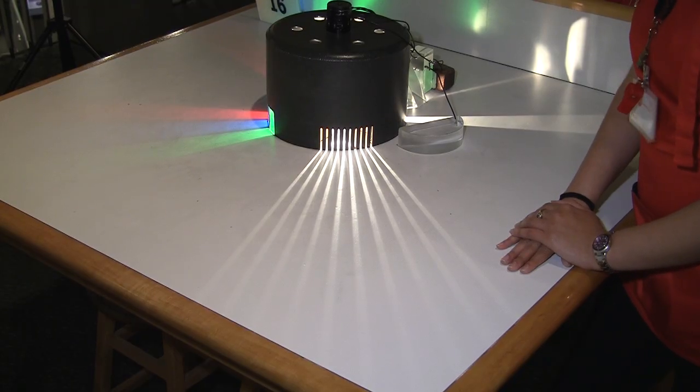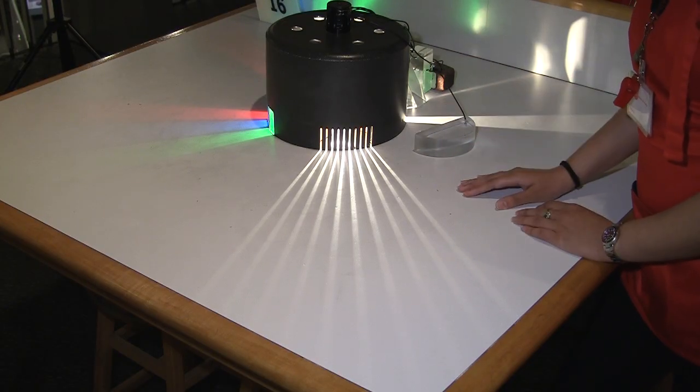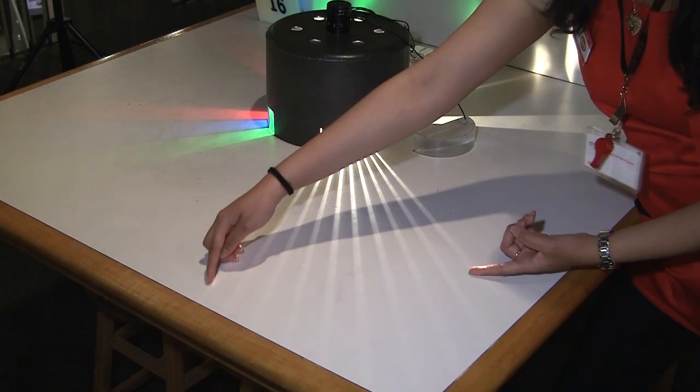So over here, we have our light source and a lens. What do you notice about the light? That's right, the light is actually spread out like this.